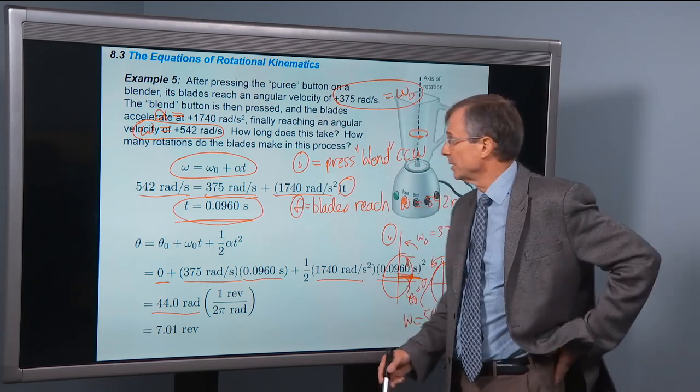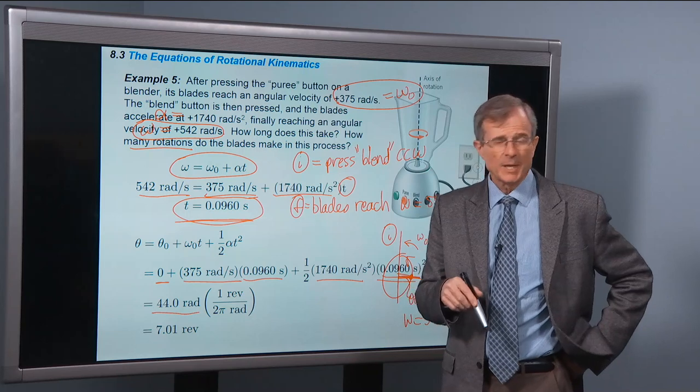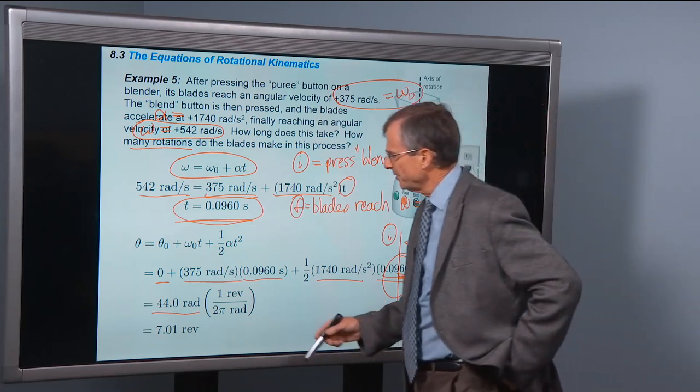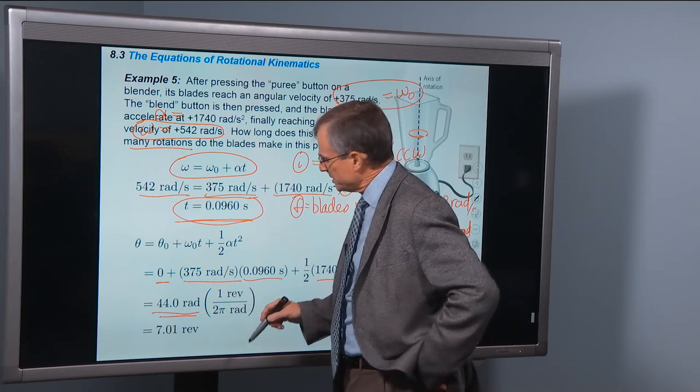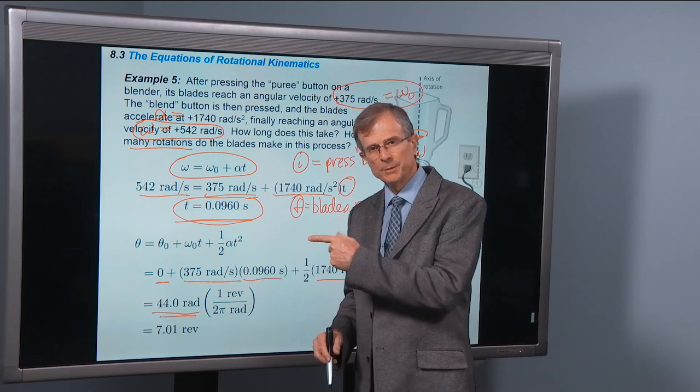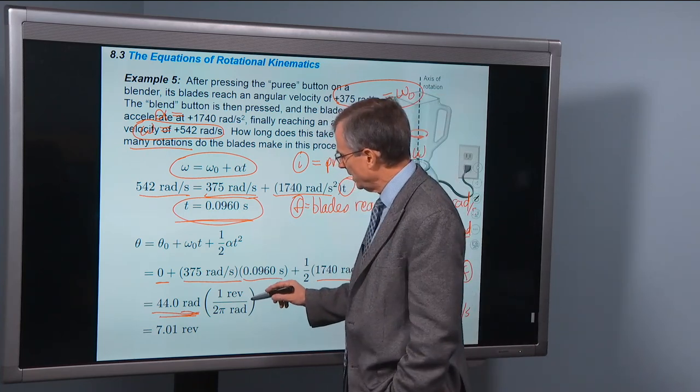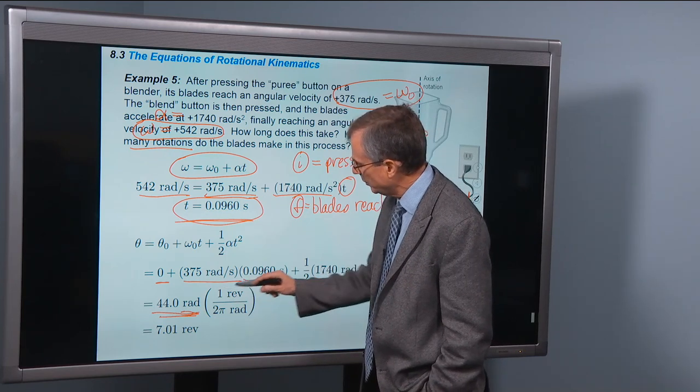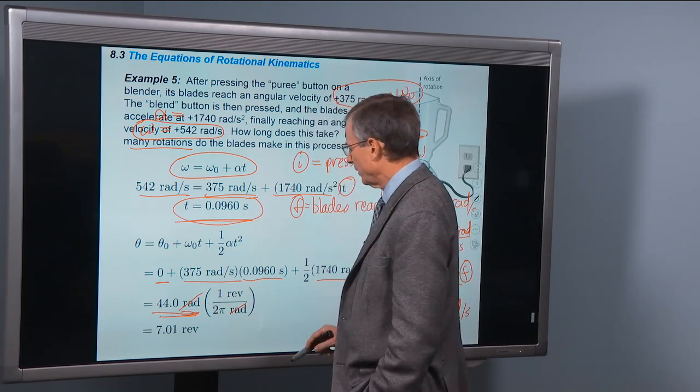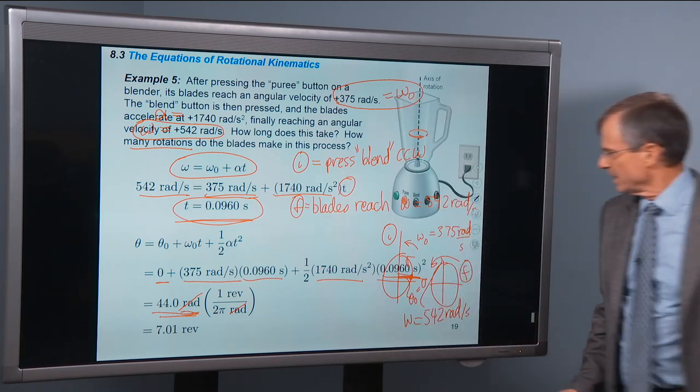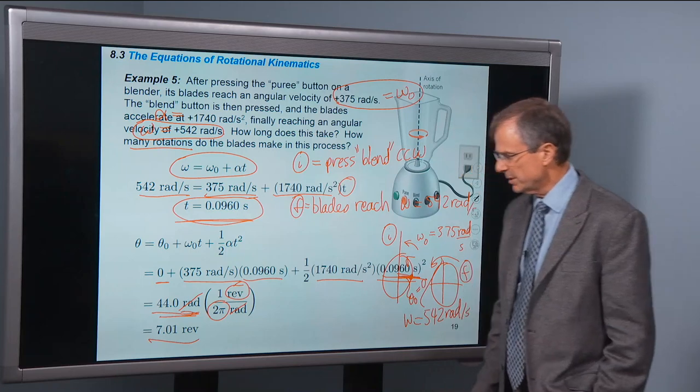And that would be a perfectly acceptable answer. But it's asking how many rotations, how many times it actually goes around, not how many radians it turns through, but how many rotations it goes through during the process. So we've got to convert that angle in radians into revolutions or rotations. There's 2π radians in one revolution. But now we're going the other way. We have the answer in radians and I want to convert to revolutions, so I'm going to invert the conversion factor: one revolution is 2π radians and the radians cancel. The revolutions win out and we just divide 44 by 2π to get 7 revolutions. So they go through 7 revolutions in that process.